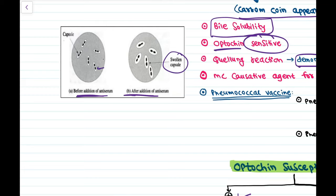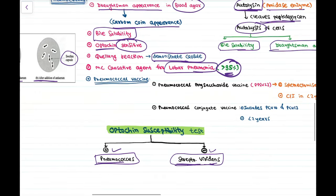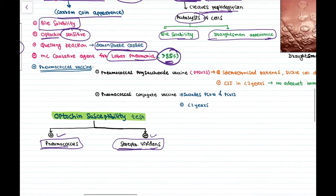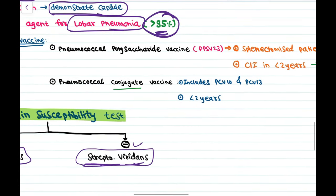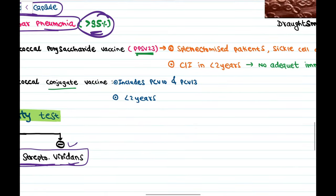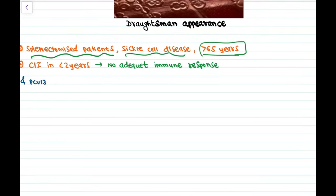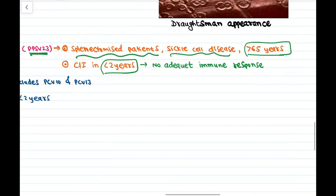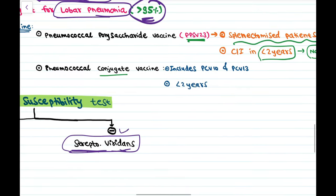Pneumococcus is the most common causative agent of lobar pneumonia, responsible for more than 95% of cases. There are two pneumococcal vaccines: PPSV23 (pneumococcal polysaccharide vaccine), given to splenectomized patients, sickle cell disease patients, and those over 65 years — contraindicated in children under 2 years due to inadequate immune response; and PCV10/PCV13 (pneumococcal conjugate vaccine) given to children under 2 years.